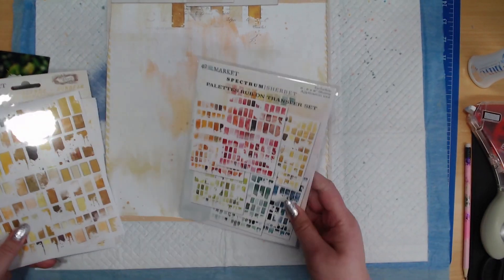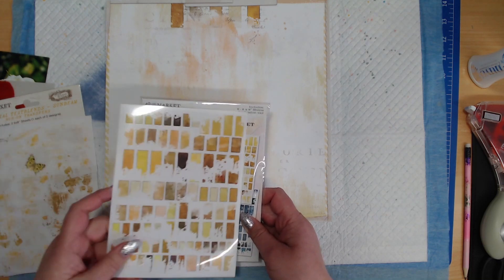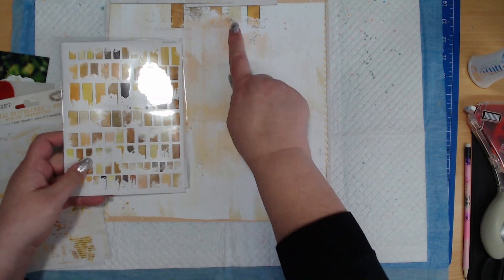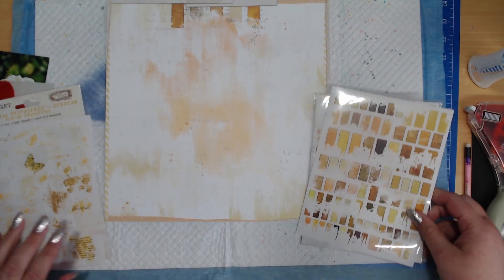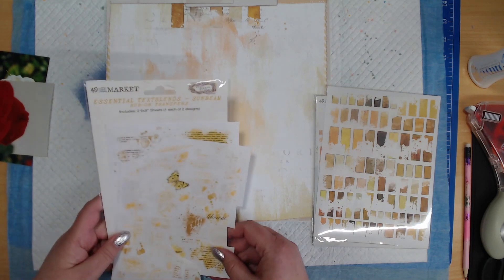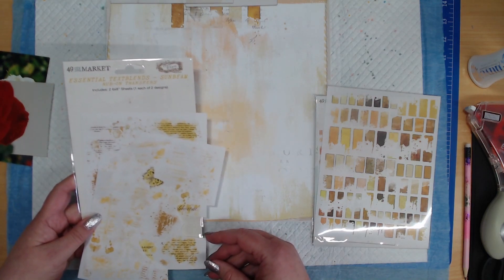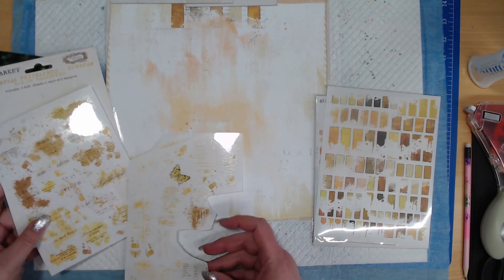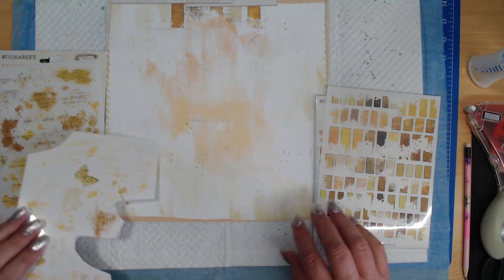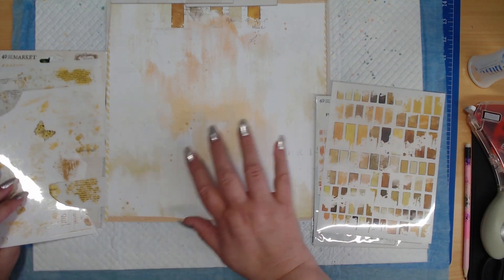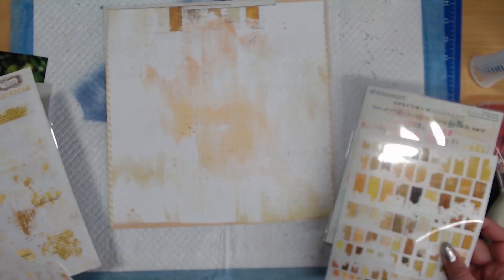What I'm going to do is I'm going to add some Spectrum Sherbet Rub On Transfer Set, which is the palettes in the yellow. They've got the same sort of design up the top within the page. So I'm just going to follow that theme a bit more. And then I'm going to use my Essential Text Blends Sunbeam, also from 49 and Market. These are some more rub-ons with just bits of writing and splatters and different things. So I'm basically going to just enhance the background that's already there. Both these products are available at the Crazy Craft Obsession website.